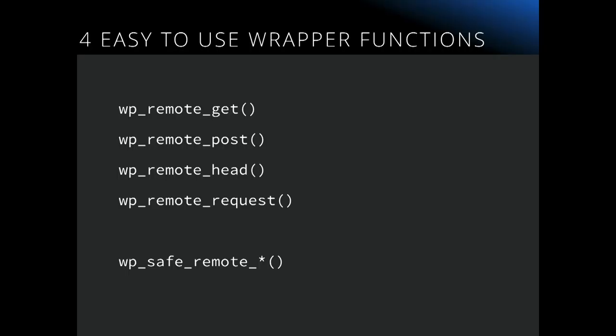They all take two arguments. The first one is the URL and the second one is an array of arguments. They're slightly different between the few, so just reference that if you haven't used them before. A note: they do return raw request data. So if you're handling what comes back, you need to test for WP_Error because if there's an error, that's what you'll get. There are also some other helper functions to manipulate the request you get back. The safe remote versions — safe remote get, post, head, and request — should be used if you have the URL as a variable, maybe based on user input. It'll check the URL and help avoid cross-site request forgery.